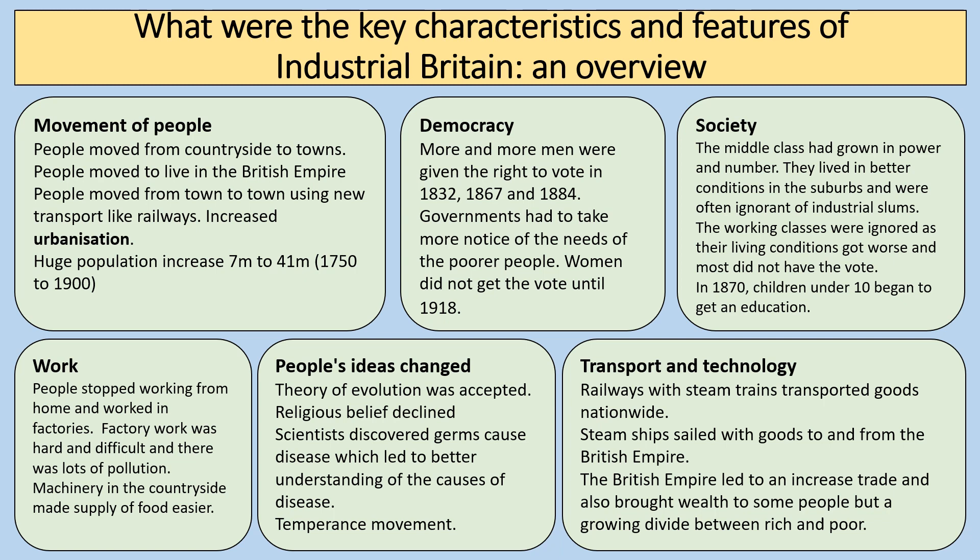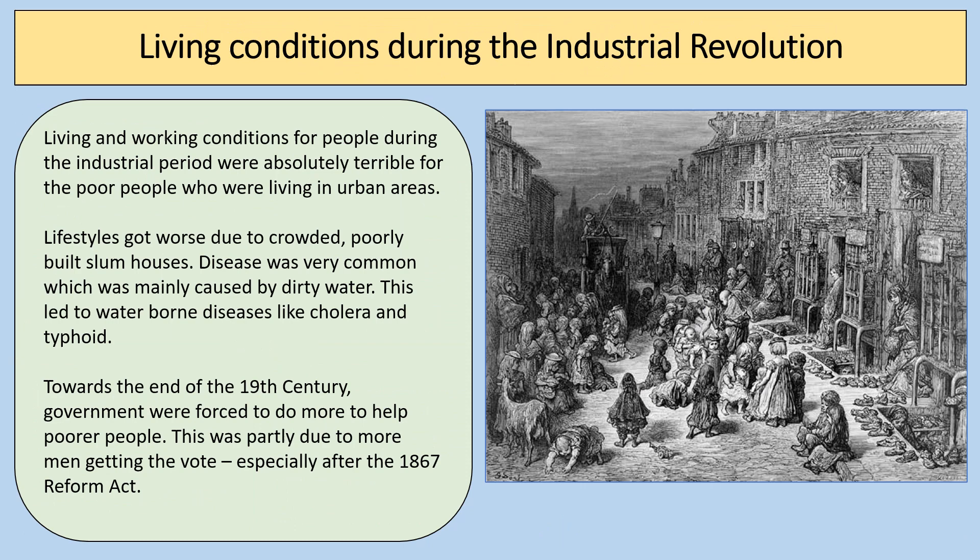People's ideas changed: the theory of evolution was accepted, religious belief declined, and scientists discovered that germs caused disease. Louis Pasteur did that in 1861, leading to a better understanding of the cause of disease. There was also the temperance movement, which tried to encourage people not to drink alcohol. Transport and technology improved massively — railways with steam trains transported goods nationwide, steamships sailed with goods to and from the British Empire. The British Empire led to a huge increase in trade and brought wealth to some people, but also a growing divide between rich and poor.